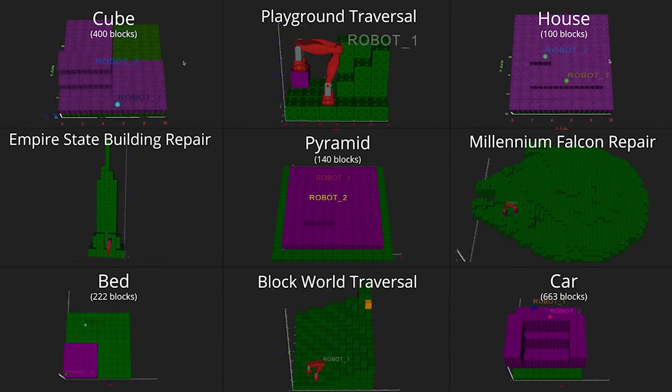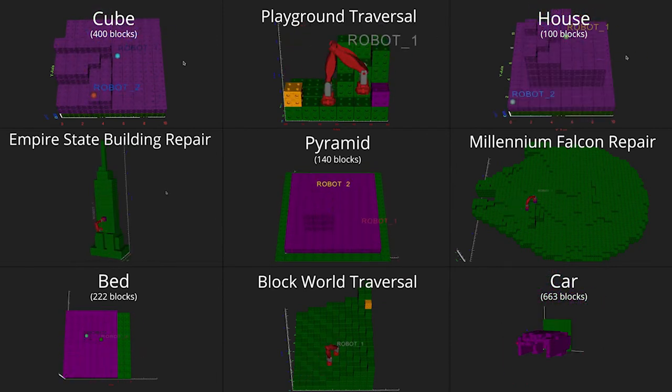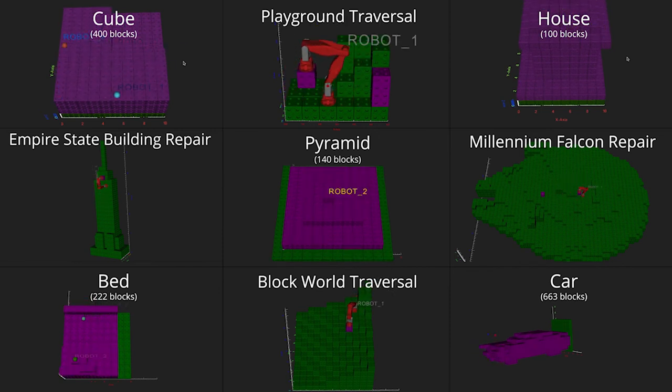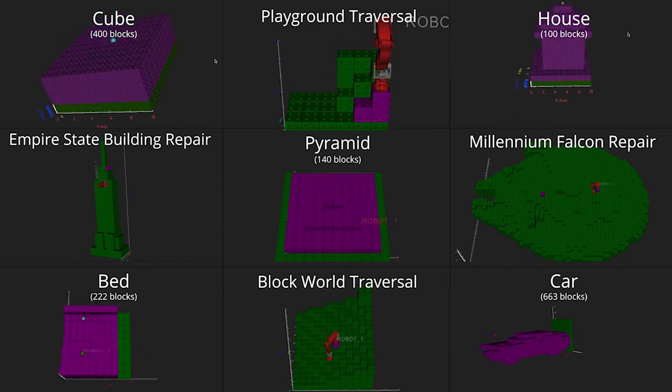This building algorithm can be used to build a wide class of connected structures, from houses to cars. Our robots can place blocks in challenging configurations such as at the top of the Empire State Building.